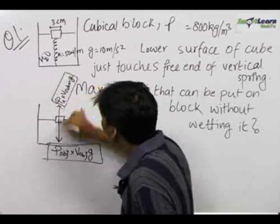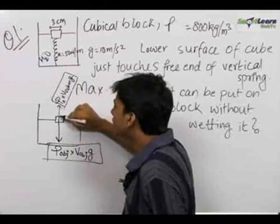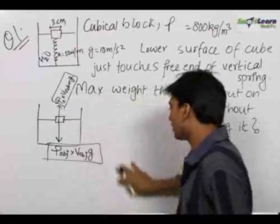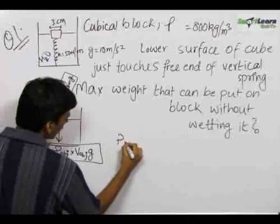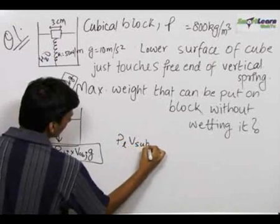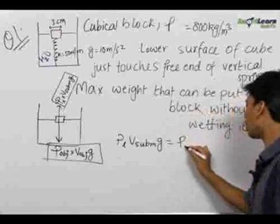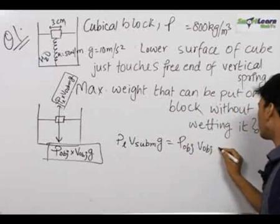The buoyant force is always equal to the density of the liquid into the volume submerged into g and it is always perpendicular to the surface and directed outwards. Now we balance these to get rho liquid into V submerged into g is equal to rho of the object into V of the object into g.